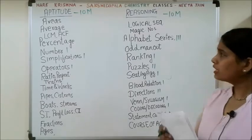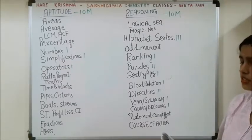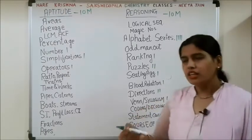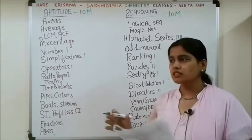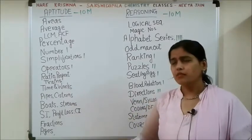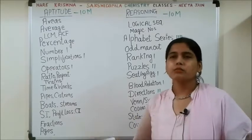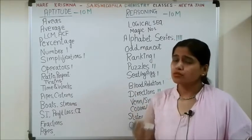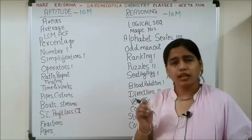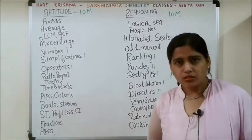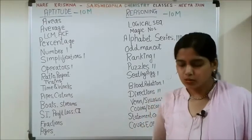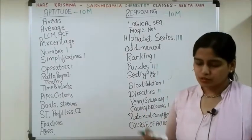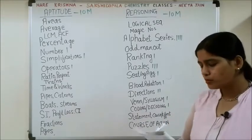Moving ahead, there is again a number series question, and then an alphabet and number series question. Then comes an information-based question — for example, a survey is given where 50 cars are there from such and such company, blue cars, cars from company X, and so on. That is called an information-based question. To solve it you need to be very accurate, manage your time, and improve your comprehension ability. This comes under puzzles — there are seven types of puzzles I will tell you later. Then comes problems on ages.